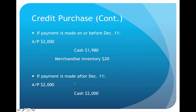The other possibility is if payment is not made until after December 11th — in that case, no discount is received. We debit Accounts Payable for $2,000 and credit Cash for the full $2,000. That would be the result of missing the discount opportunity, and we'll discuss some reasons why that happens in a future lecture.